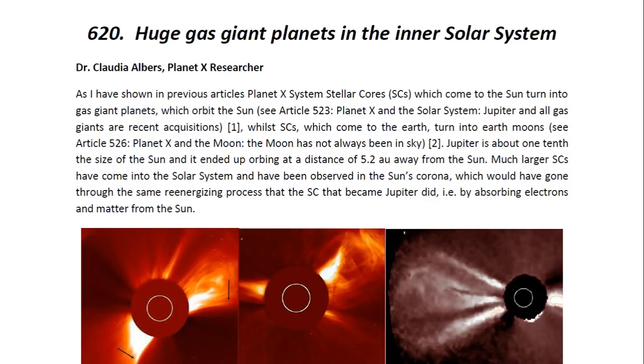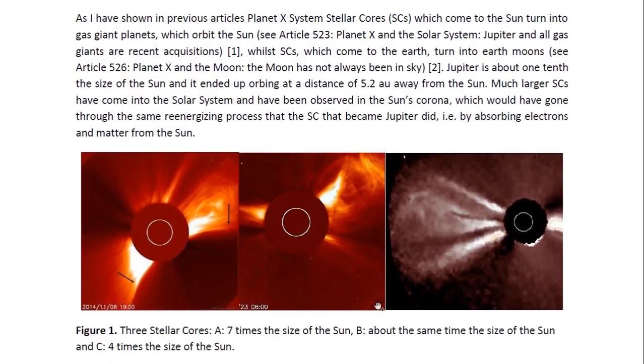Jupiter is about one-tenth the size of the Sun and it ended up orbiting at a distance of 5.2 AU from the Sun. Much larger stellar cores have come into the Solar System and have been observed in the Sun's corona, which would have gone through the same re-energizing process that the stellar core that became Jupiter did, by absorbing electrons and matter from the Sun.